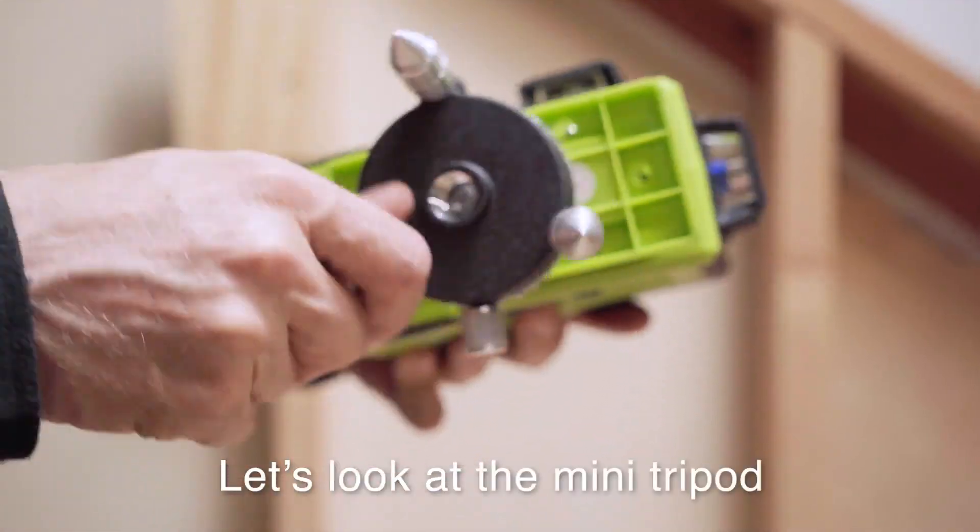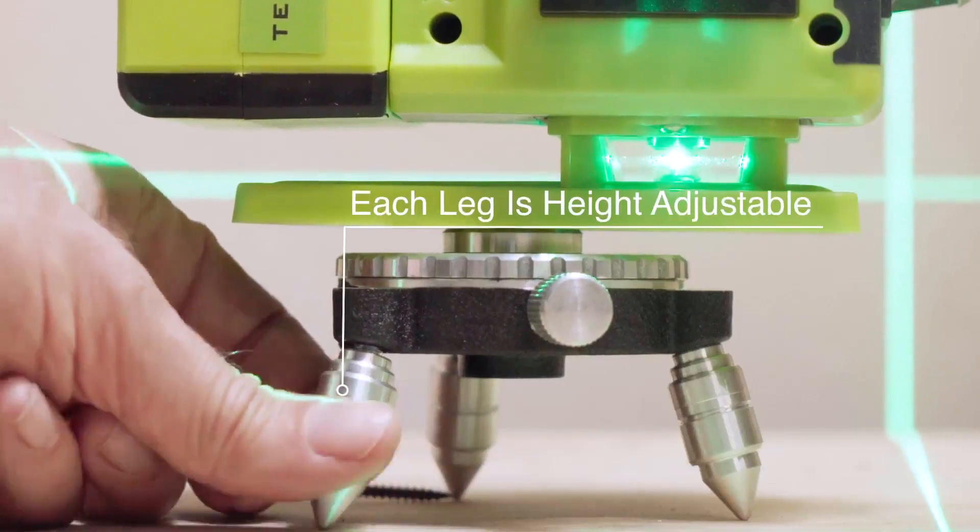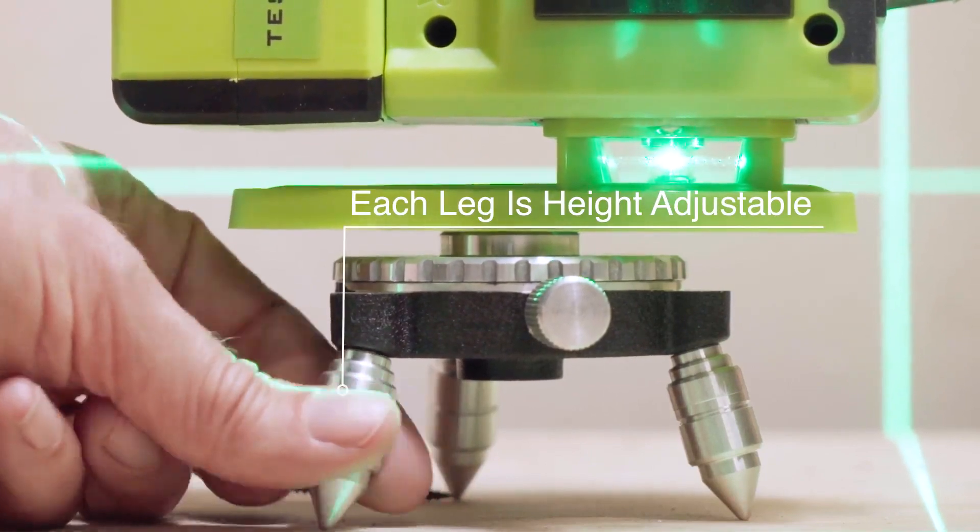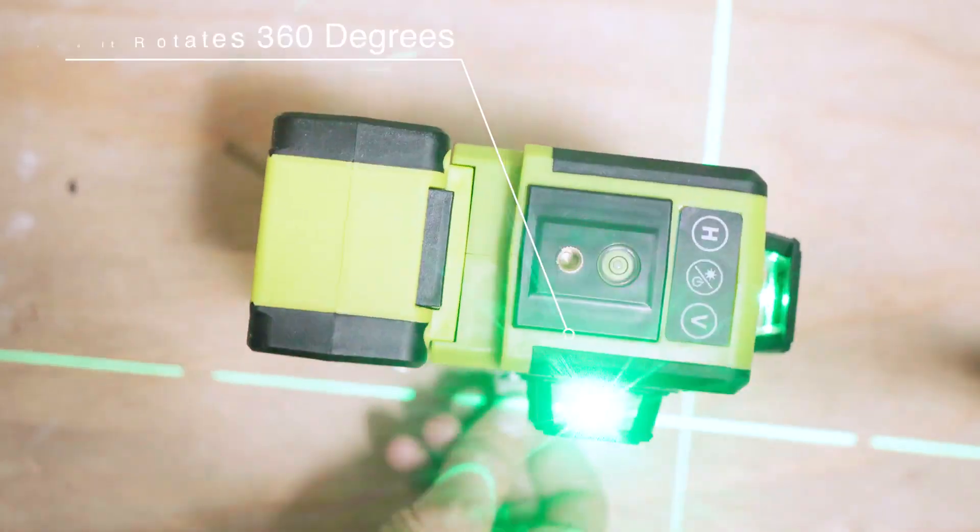Let's look at the mini tripod. Each leg is height adjustable and it rotates 360 degrees.